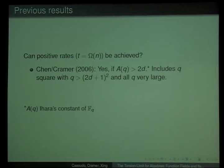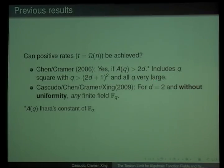In order to answer this question, Chen and Cramer introduced algebraic geometric secret sharing schemes in 2006 and they proved that for some fields you can achieve this property, namely those that have Ihara's constant bigger than two times t. This includes all Q squared with Q bigger than this thing here and Q extremely large. The authors of these papers together with Chen considered a weaker notion, the case where d equals two, and we drop this requirement of uniformity and prove that we can get this for any finite field.